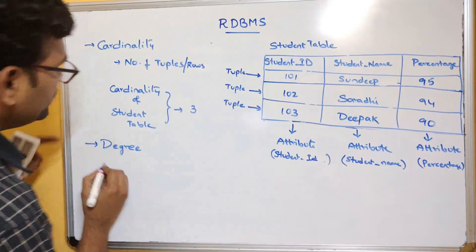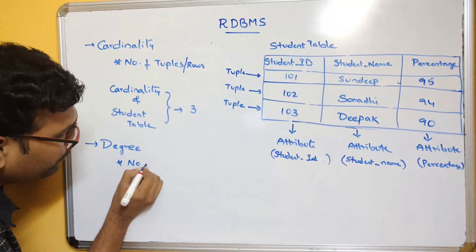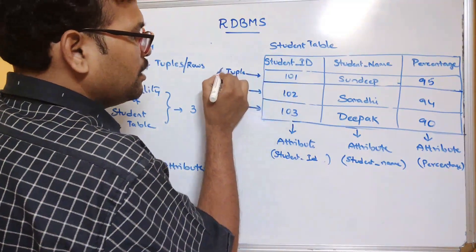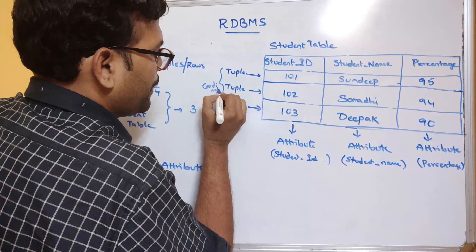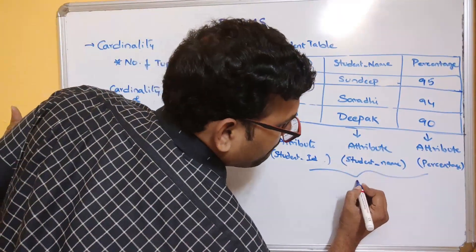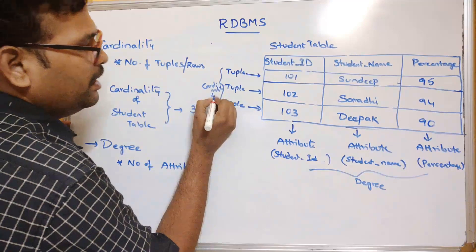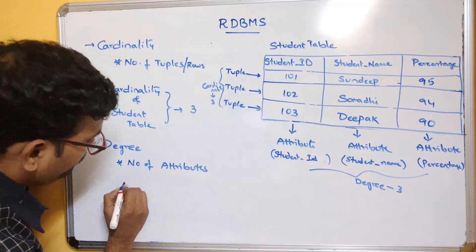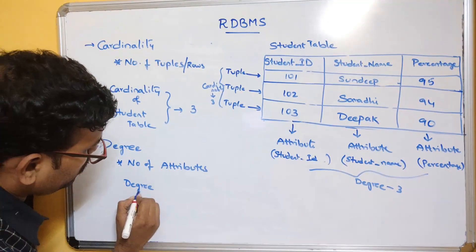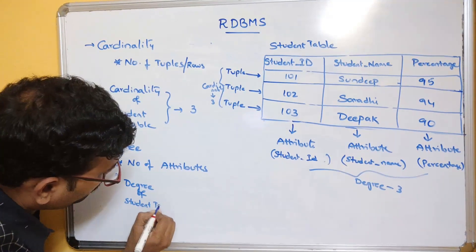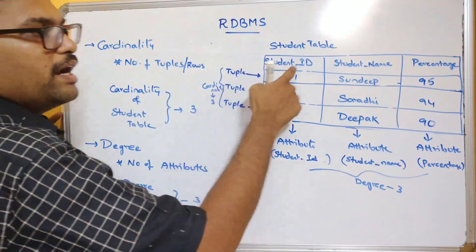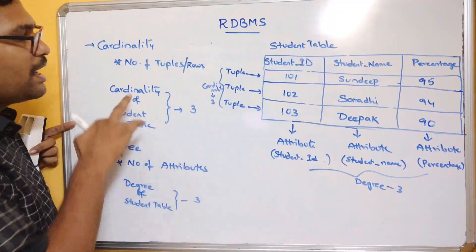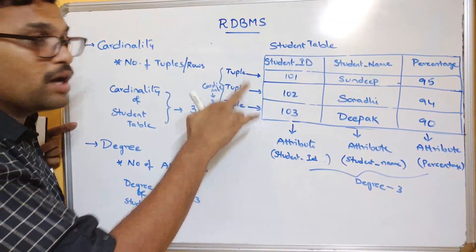The next terminology is degree. Degree means the number of attributes. The degree of the student table is 3 because there are 3 attributes: student ID, student name, and percentage — that is, 3 columns. So cardinality is the number of tuples or rows or records, and degree is the number of attributes or columns.